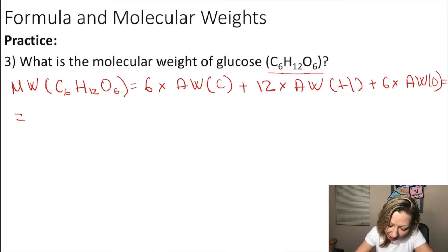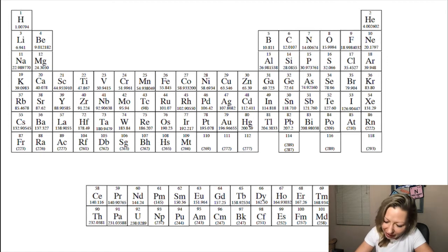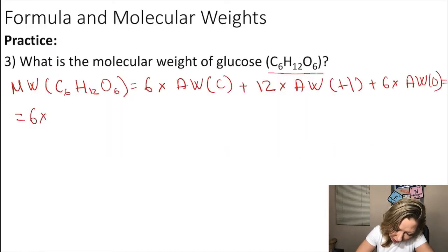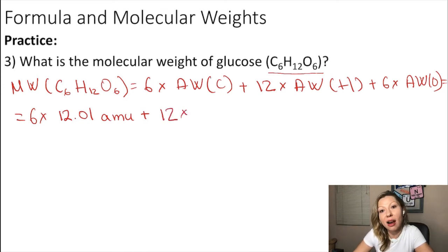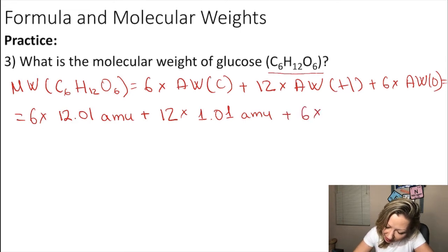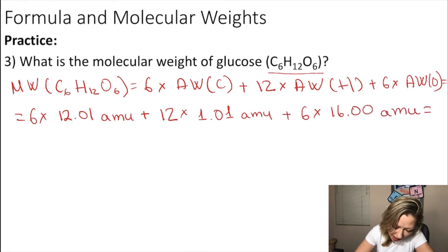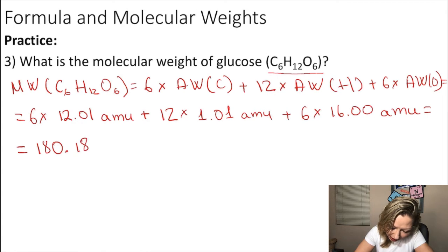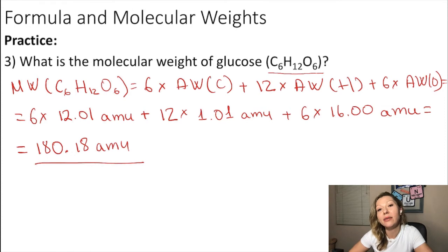Now we plug in the numbers from the periodic table. Carbon is element number 6, atomic weight 12.01 AMU. So: 6 × 12.01 AMU + 12 × 1.01 AMU + 6 × 16.00 AMU. If you do this calculation, you get 180.18 AMU. That is the molecular weight of glucose.